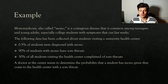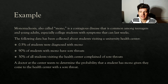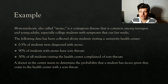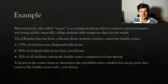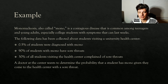So let's jump in with our example. We're going to be talking about mono, or mononucleosis, which is a highly contagious disease that is common amongst teenagers and young adults — also called the kissing disease, especially common among college students. The following data has been collected by a university health center: 0.5% of students that come into the health center have been diagnosed with mono. 90% of those students with mono do come in with a sore throat. And overall, 30% of students who visit the health center complain of a sore throat.